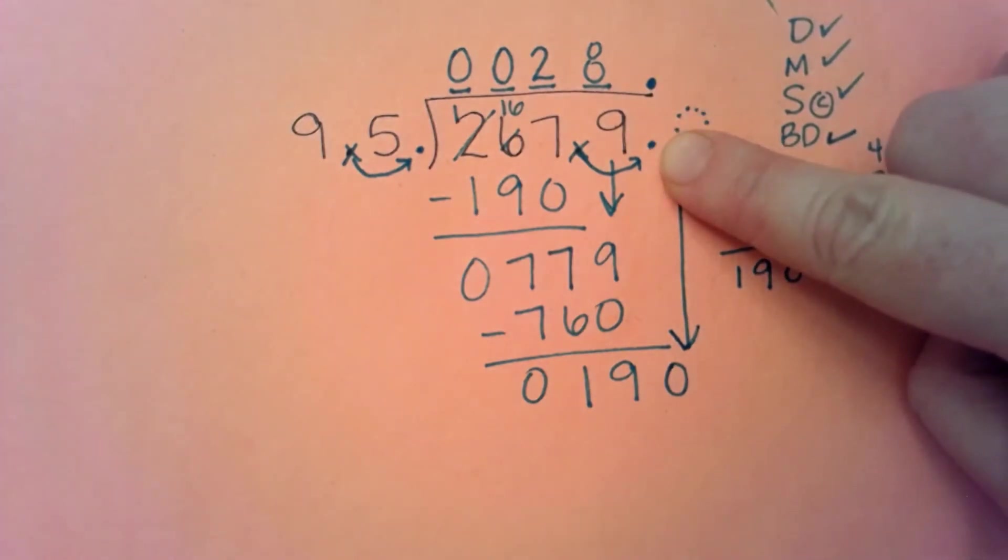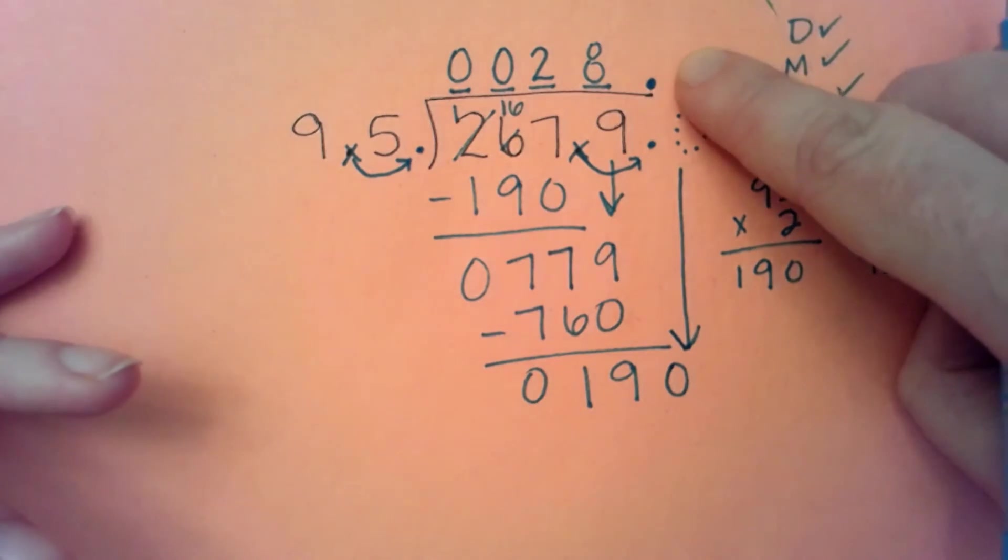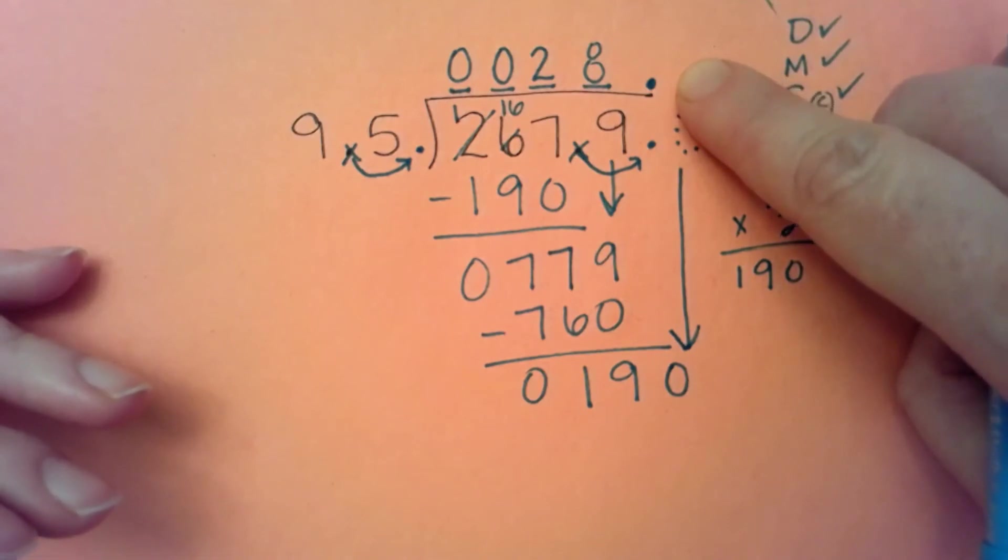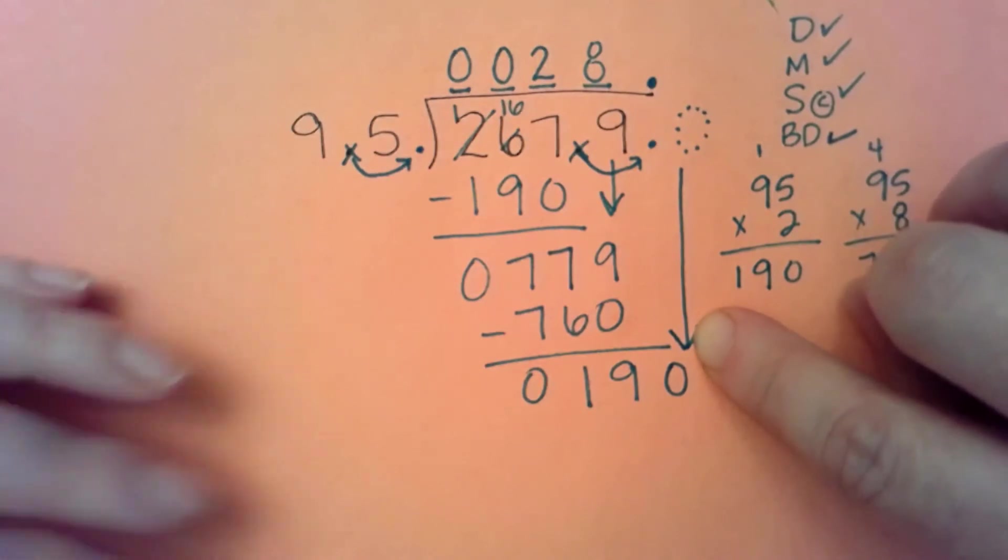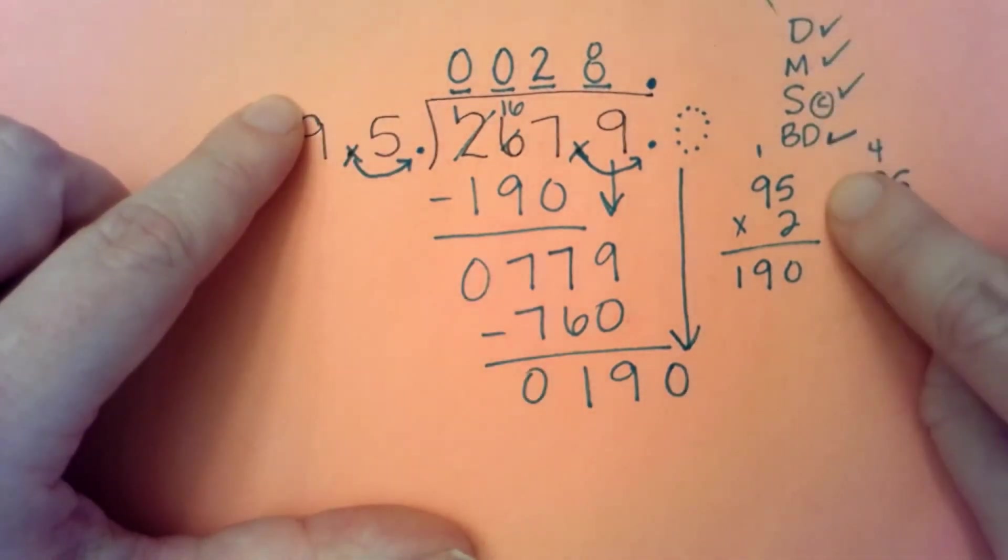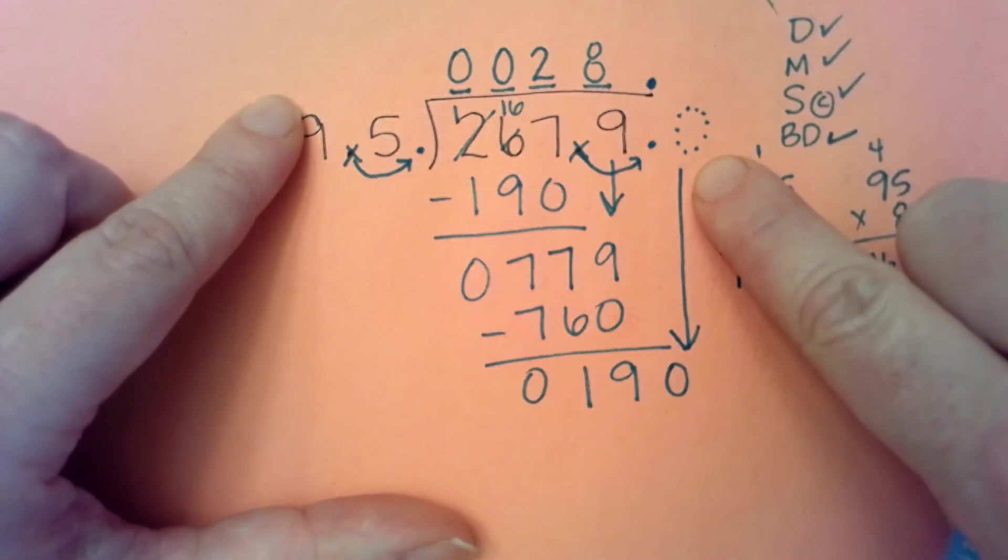My next divide, multiply, subtract, bring down, of course, it's going to follow the decimal point. And it has to for this strategy to work. But again, it's not changing the value of my dividend. We've just added a zero. We've given ourself a bring down zero. And now we get to do divide, multiply, subtract, bring down one more time because we added more zeros.